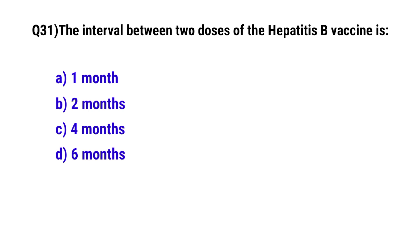Question No. 31. The interval between two doses of the hepatitis B vaccine is? The correct option is A. 1 month.